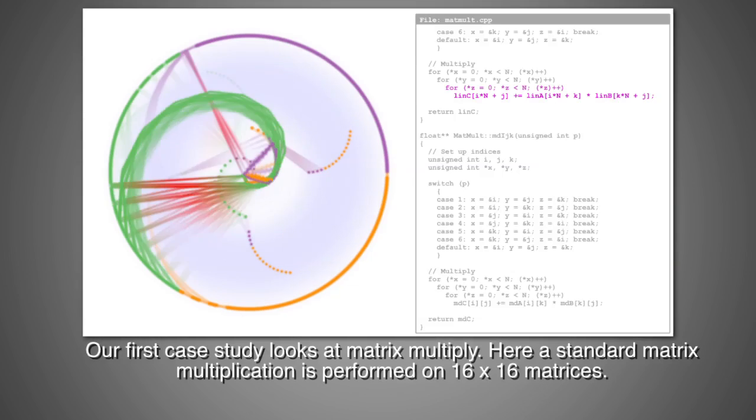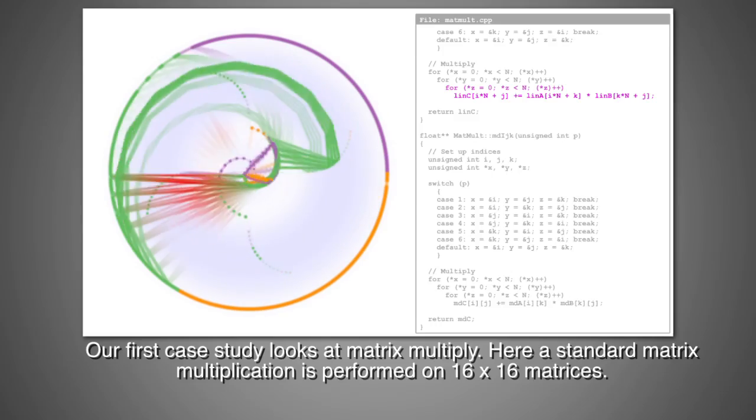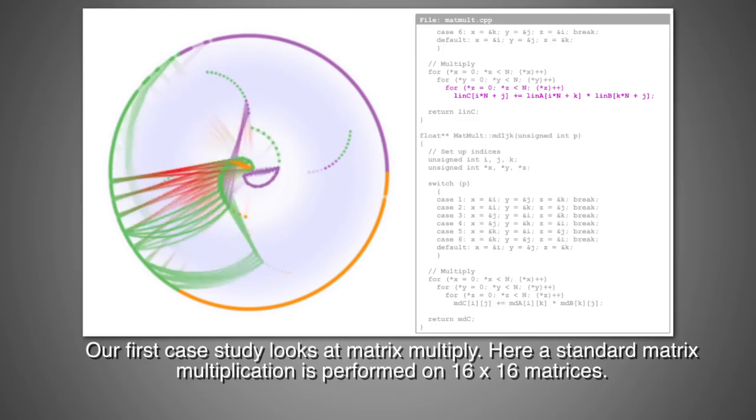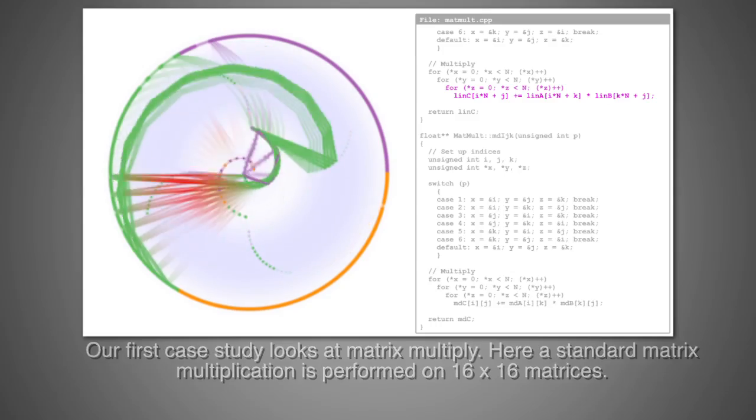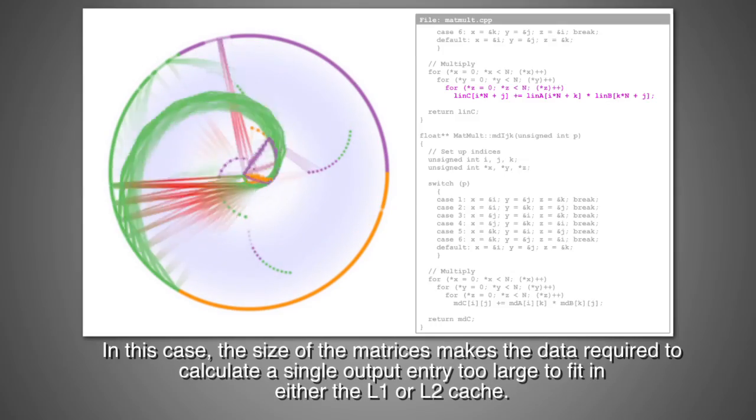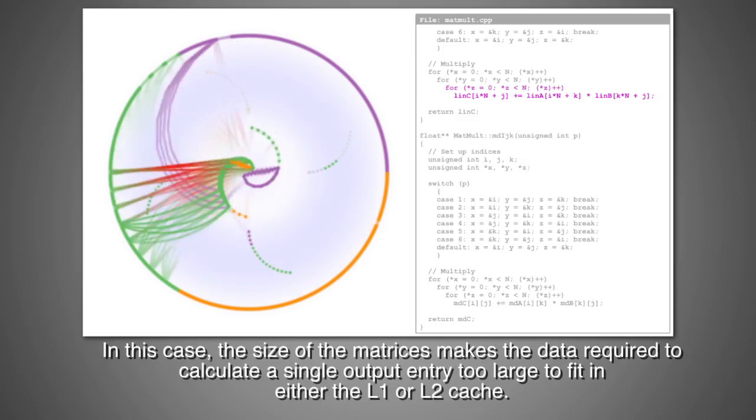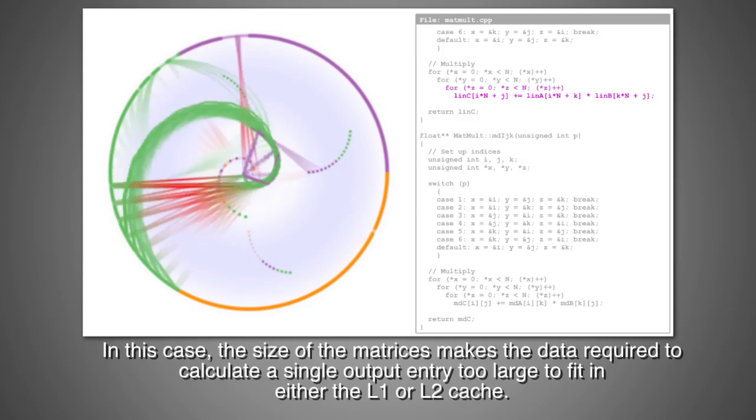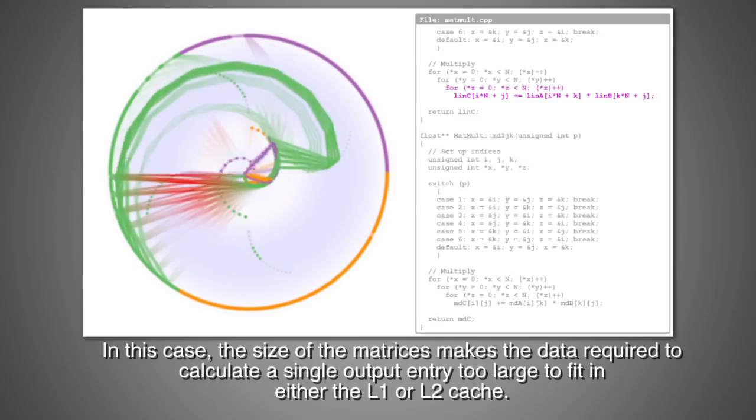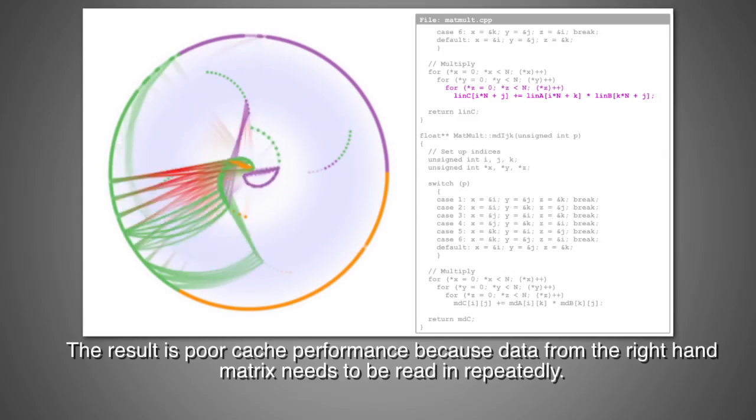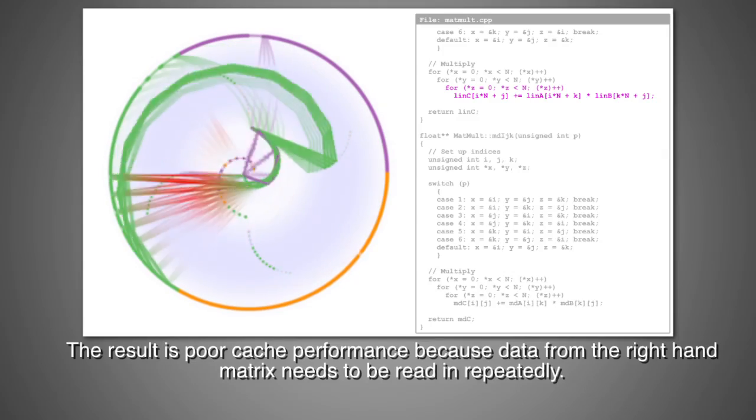Our first case study looks at a matrix multiply. Here, a standard matrix multiplication is performed on 16x16 matrices. In this case, the size of the matrices makes the data required to calculate a single output entry too large to fit in either the L1 or L2 cache. The result is poor cache performance because the data from the right-hand matrix needs to be read in repeatedly.